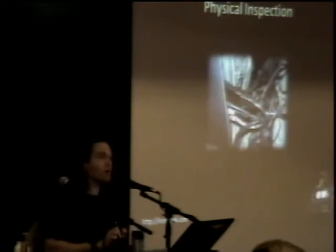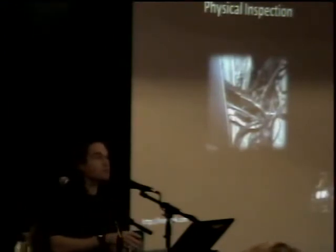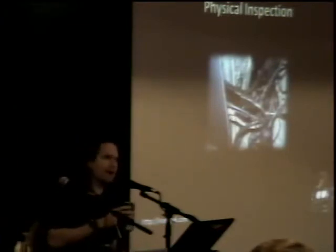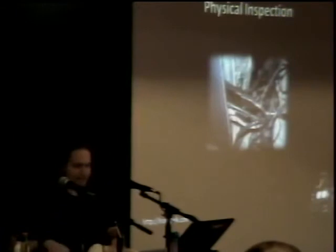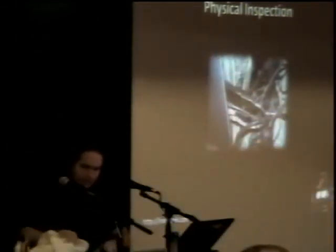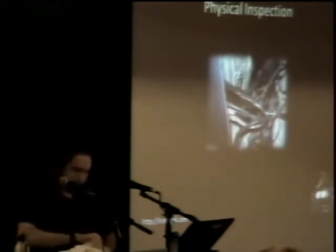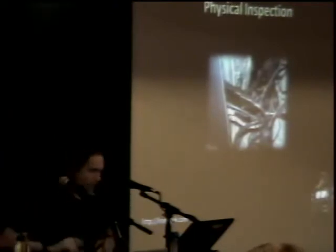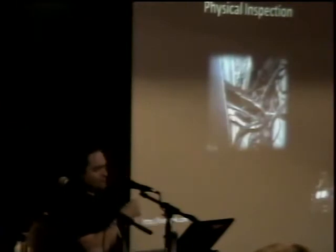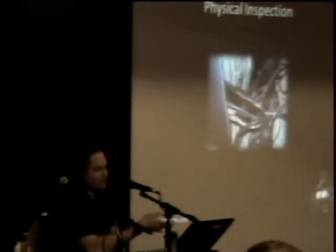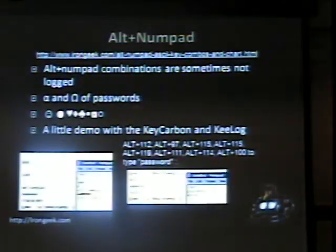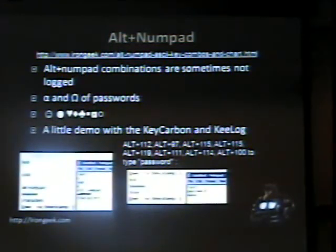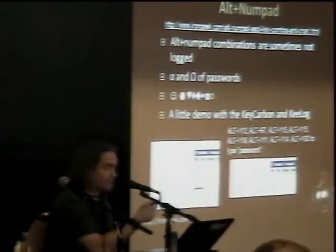Going back to mitigation: what can we do? First, physical inspection — unfortunately it's the best way I've found to detect keyloggers. Using the Alt+numpad approach is another option. The KeyCarbon totally fails at logging Alt+numpad sequences — you might use ASCII equivalents to type the word 'password' and the KeyCarbon just outputs garbage. However, you'd only use that technique if you already knew a keylogger was there, in which case you probably wouldn't want to use that machine at all.